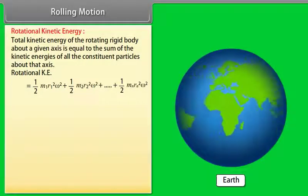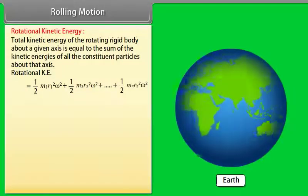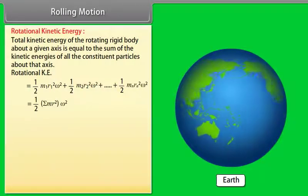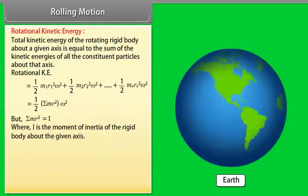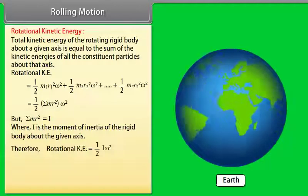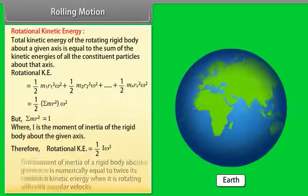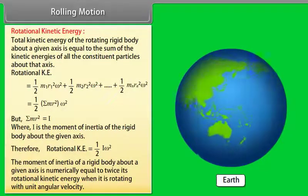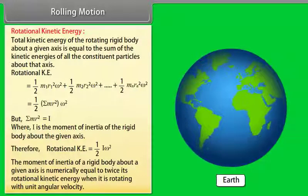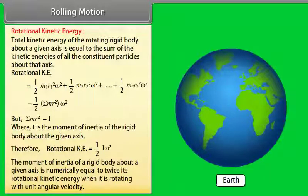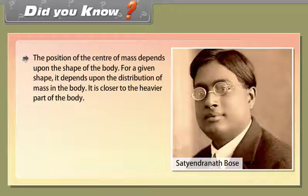Rotational kinetic energy: the total kinetic energy of a rotating rigid body about a given axis equals the sum of the kinetic energies of all constituent particles about that axis. Rotational KE = ½·M1·R1²·ω² + ½·M2·R2²·ω² + ... + ½·Mn·Rn²·ω² = ½·(summation of mi·ri²)·ω² = ½·I·ω². The moment of inertia of a rigid body is numerically equal to twice its rotational kinetic energy when rotating with unit angular velocity.